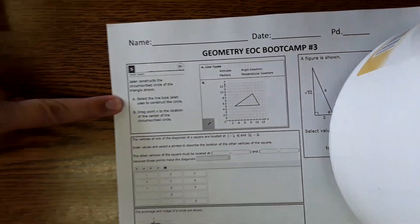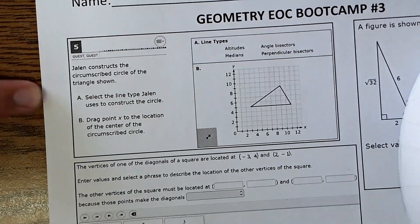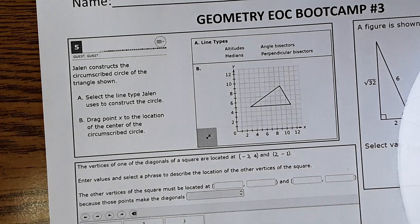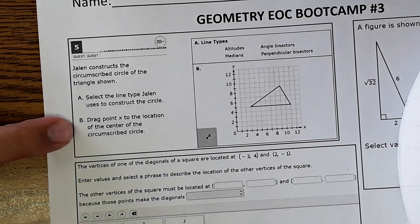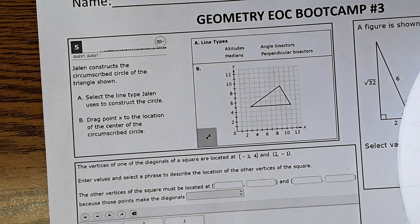The first problem right here is one of the harder ones on the page. It says Jalen constructs the circumscribed circle of the triangle shown. Select the line type Jalen uses to construct the circle and drag point x to the center of the circumscribed circle.